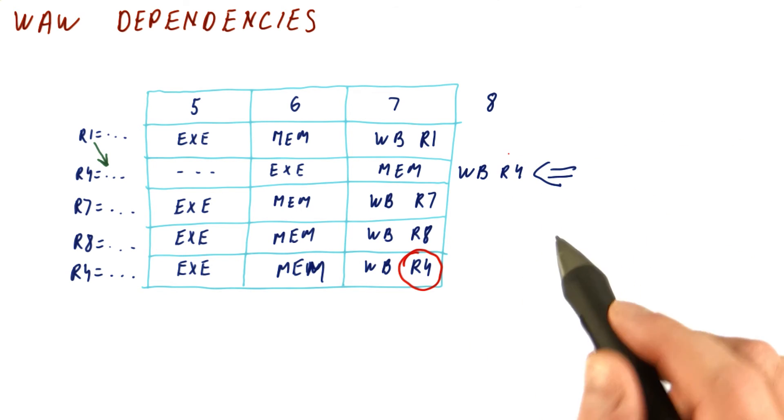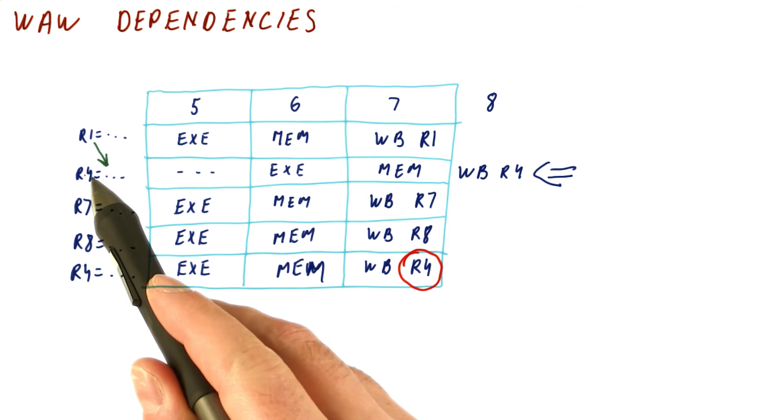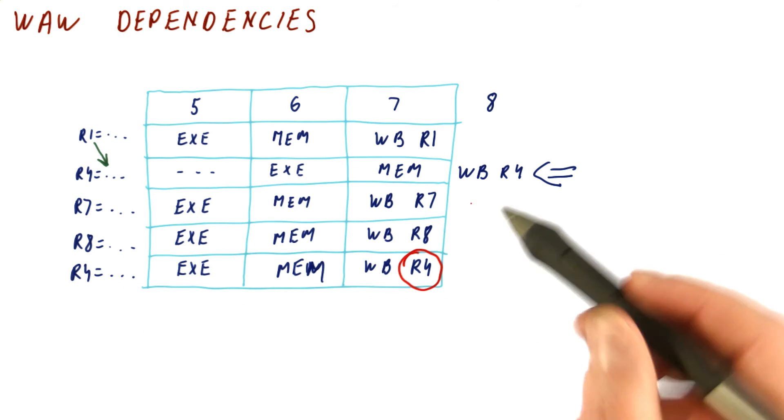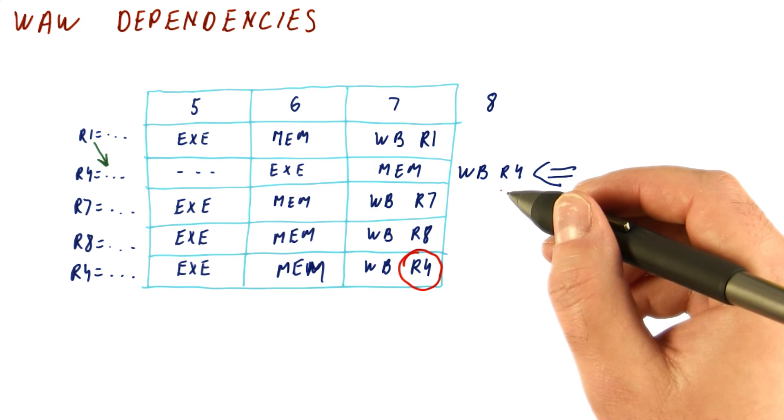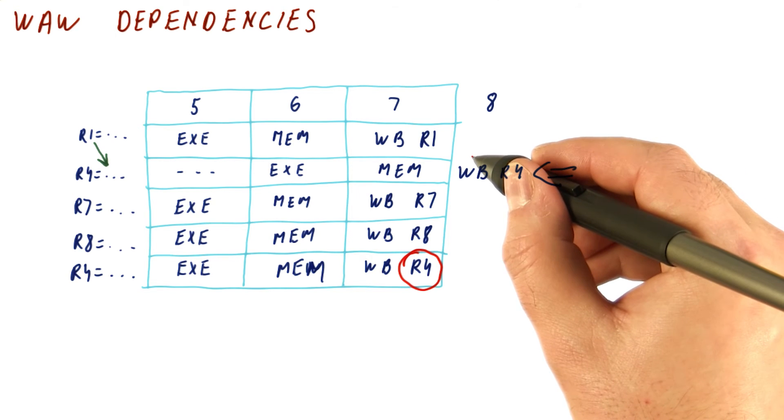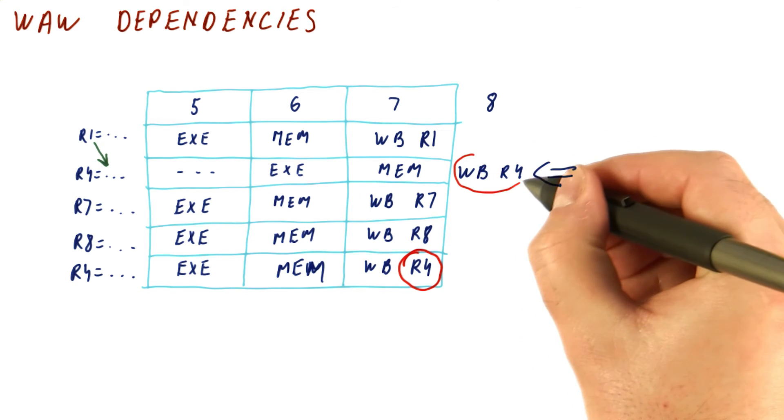Why is it a problem? I mean, why did it occur? Well, because this instruction got delayed. So we have executed these two instructions out of order. This is the second instruction, and it writes in the eighth cycle.